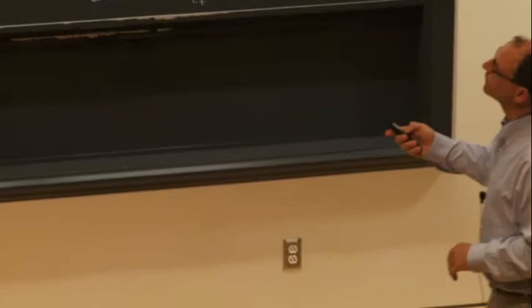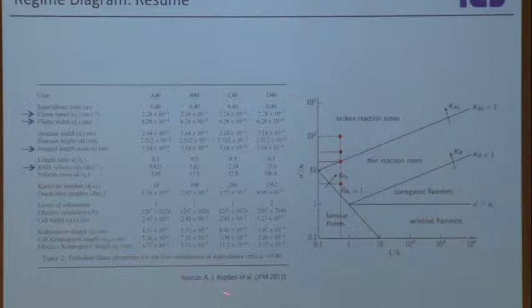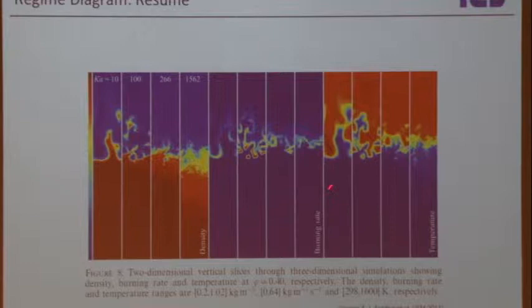This DNS by Aspden was done at different values of U prime/S_L. These four cases span the regimes: one is in the thin reaction zones regime, one is just at the border, and two are in the broken reaction zones regime. Looking at the burning rate: at low Karlovitz you still see a thin sheet; at higher Karlovitz it becomes more corrugated; and at even higher values it becomes more distributed.